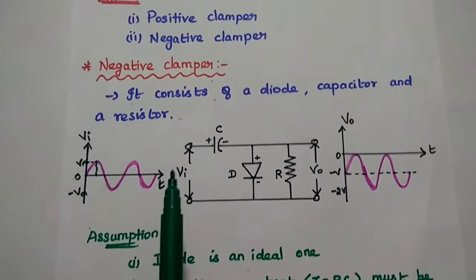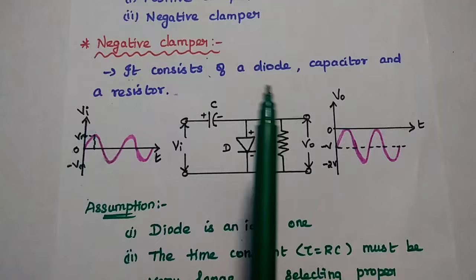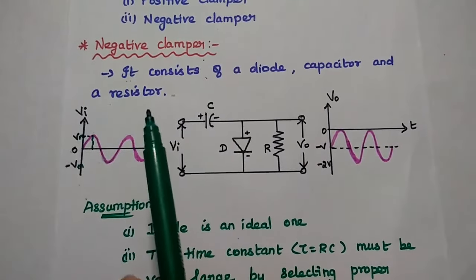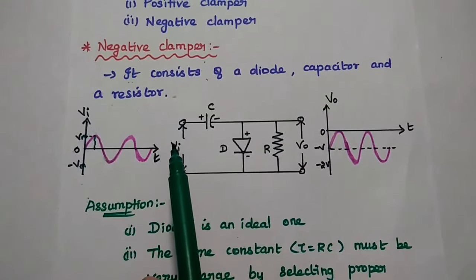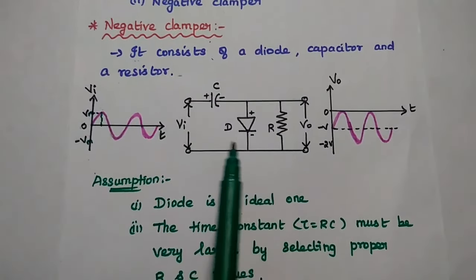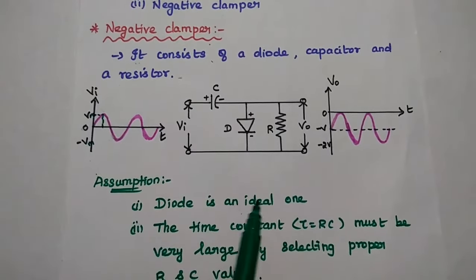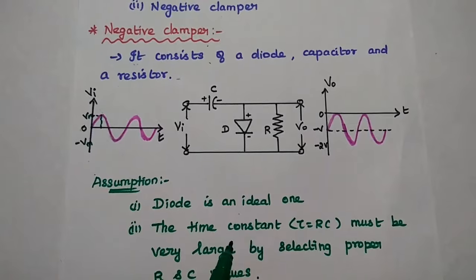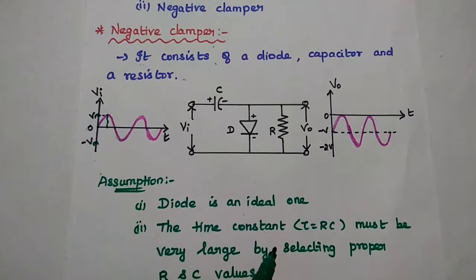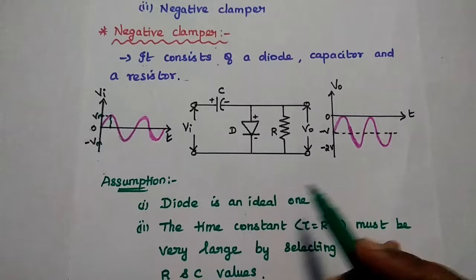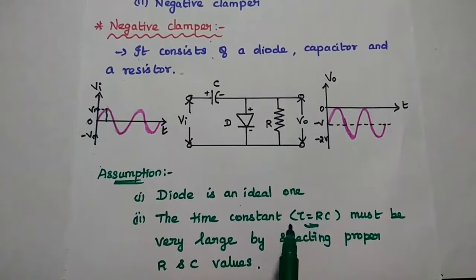First one is the negative clamper. In general, the clamper circuit is very simple, consisting of a diode, capacitor, and resistor. For this negative clamper, the positive of the diode is connected with the input side, and the negative one is grounded. We have to make two important assumptions: one, the diode is ideal; and two, the time constant τ = RC must be very large by selecting proper values of resistor and capacitor.